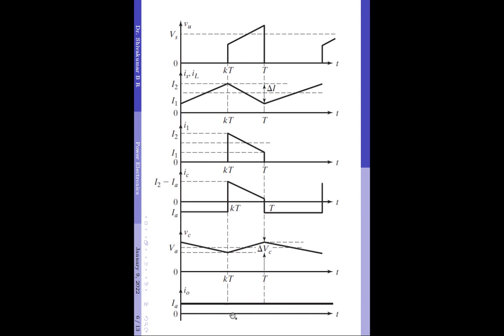Lastly, coming to the load current waveform, we note that the load current continues to flow in the same direction in both modes and is constant. That is why it is denoted as Ia, which stands for the average load current value.